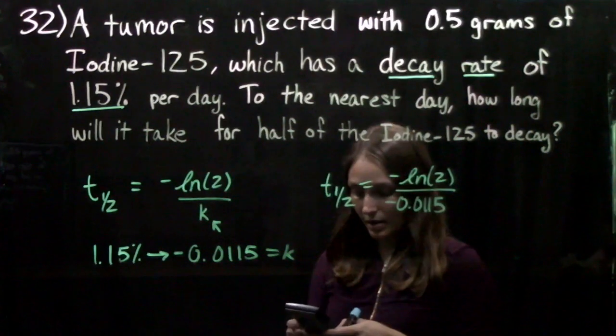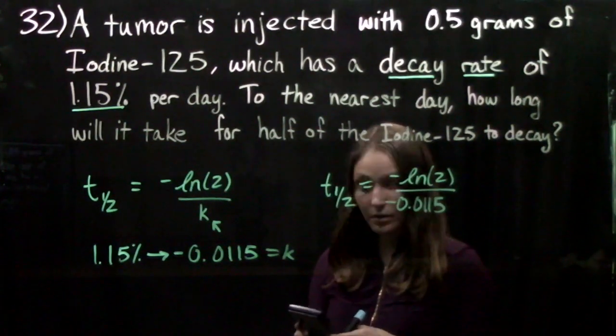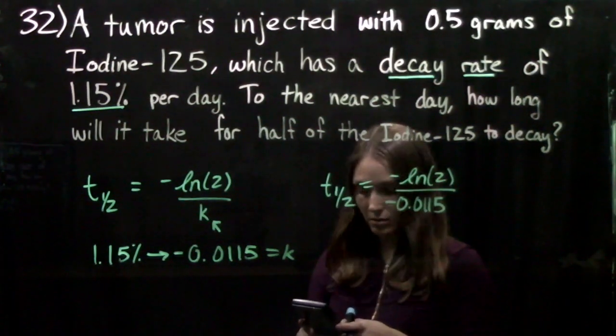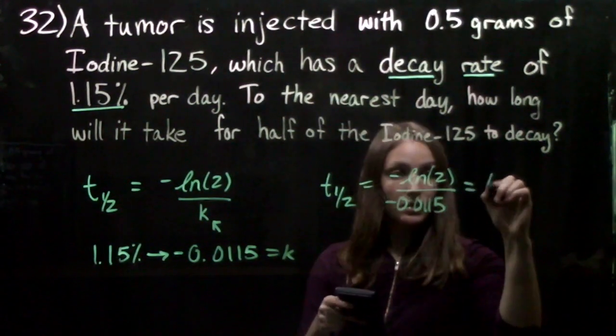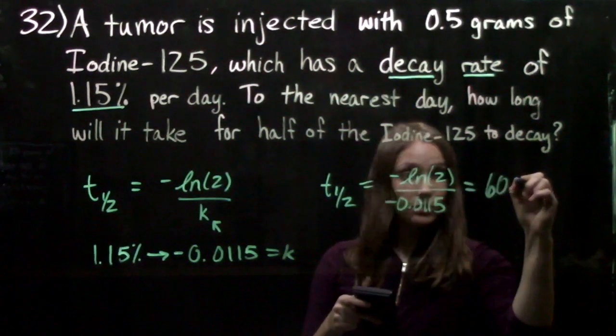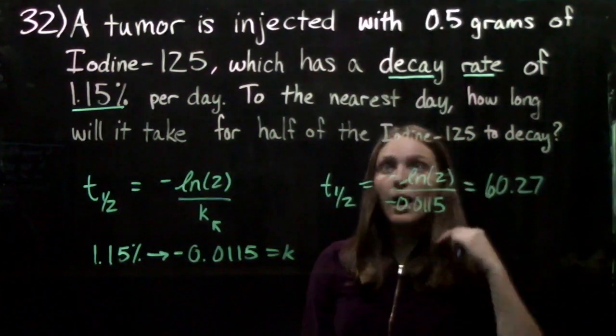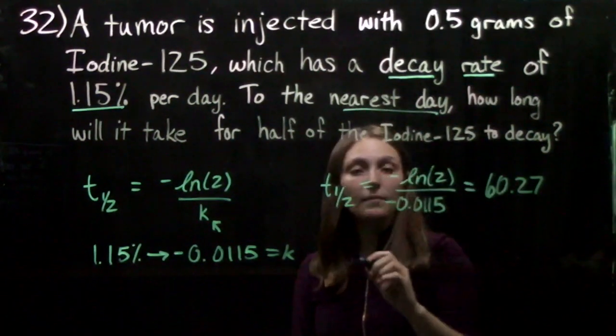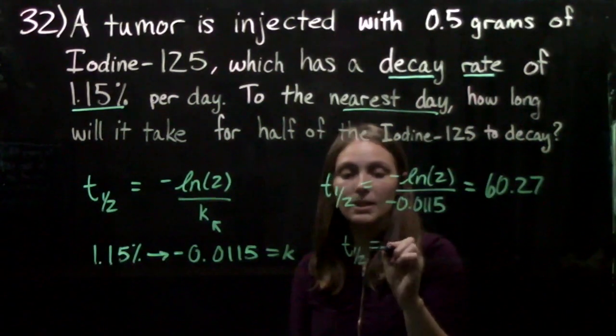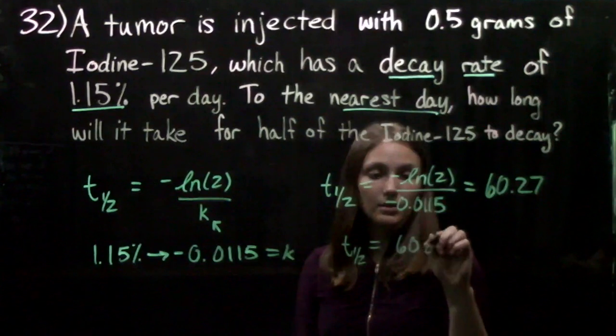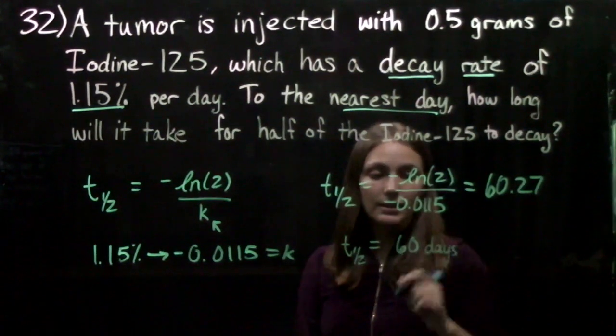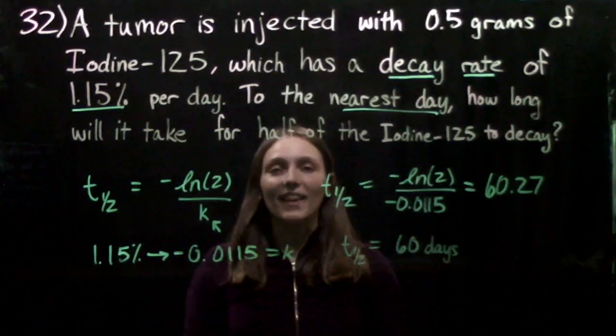And when we plug that into our calculators we will get 60.27, and we're looking for to the nearest day, so we'll say that t half, the time it takes for half of the iodine to decay to the nearest day, is going to be 60 days. And that's our answer.